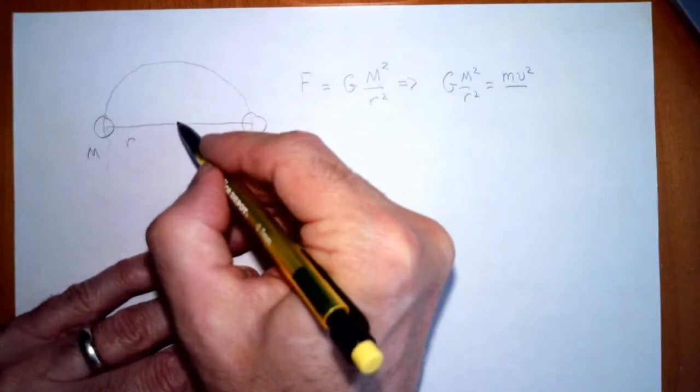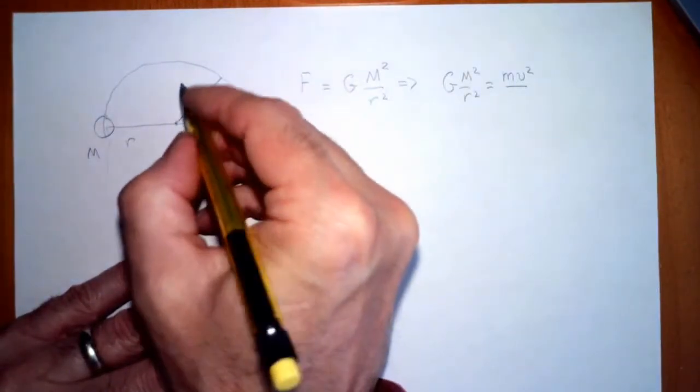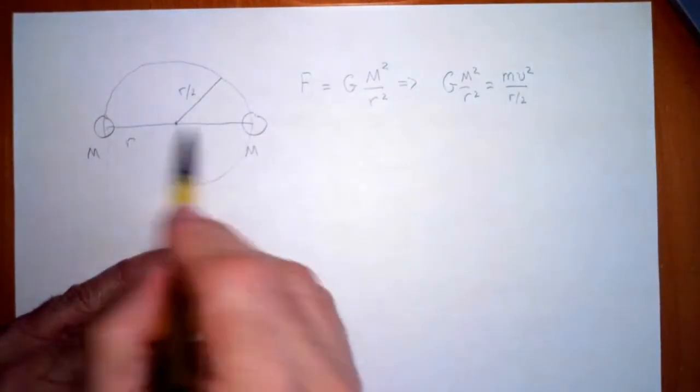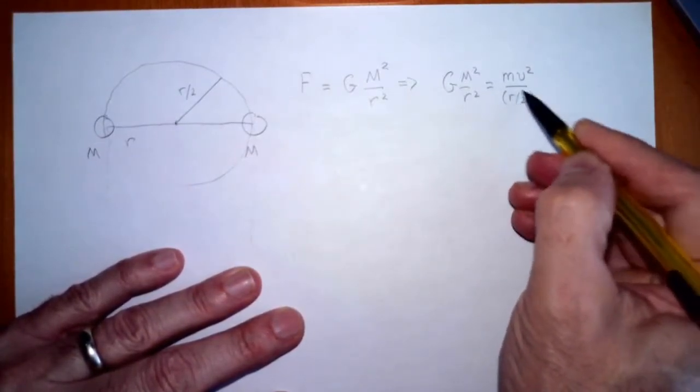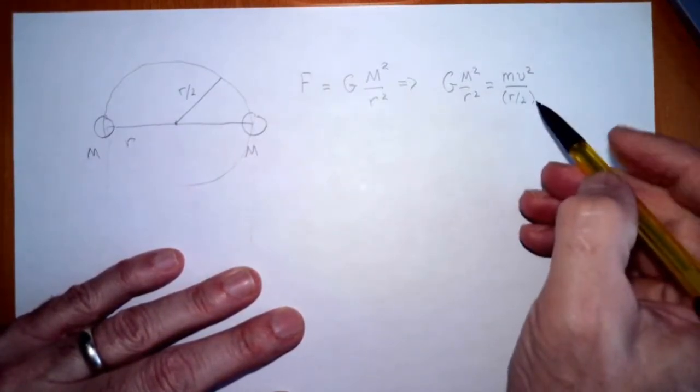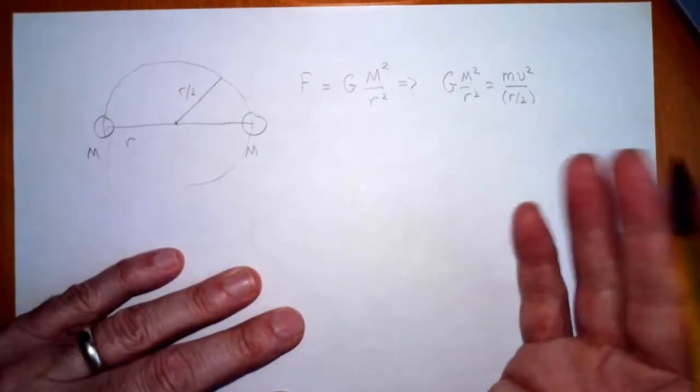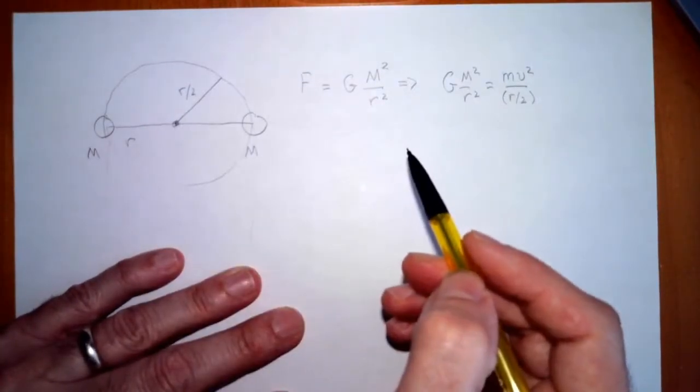But hang on, the r in this case is the radius of the circle. That's actually r over 2, because I've already labeled r as the distance between the stars. So the r that goes in the rate of change of momentum is the radius of the circle. That's half of the distance between the two stars. In this case, since they're equal mass, the center of mass is exactly in the middle.